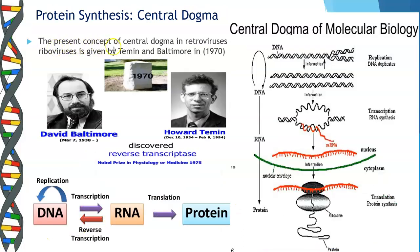The present-day concept of the central dogma in retroviruses and riboviruses was given by Temin and Baltimore in 1970. Their discovery was the process of reverse transcription using reverse transcriptase as the enzyme. So from RNA you can get back your DNA through reverse transcription.